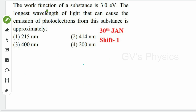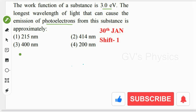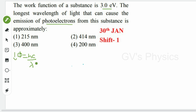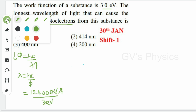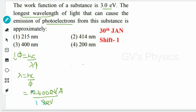Next, January 13th question: the work function of a substance is 3 eV. The longest wavelength of light that can cause emission of photoelectrons from the substance is approximately? Work function = hc/λ. Minimum energy corresponds to maximum (longest) wavelength. Reforming: λ = hc/φ. Substituting hc = 12400 eV·Å and work function = 3 eV, the electron volts cancel, giving λ = 12400/3 ≈ 4133 Å ≈ 414 nm. Option 2 is the right answer.